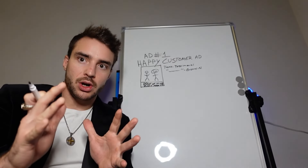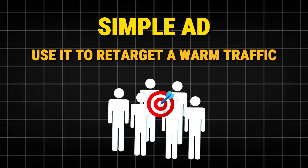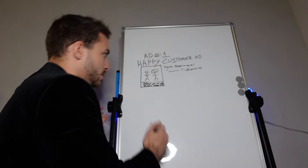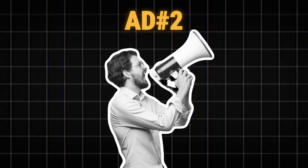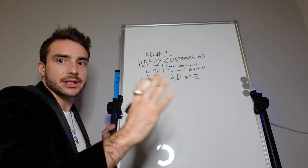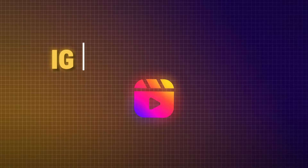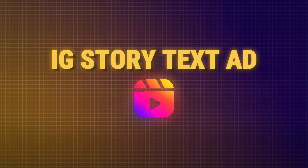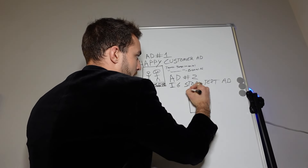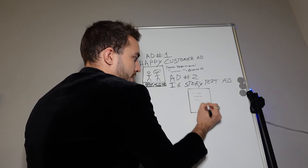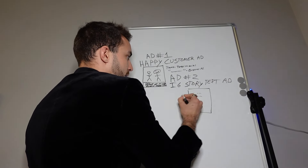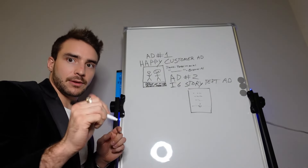That Happy Customer Ad generates good results. It's a simple ad you can use to retarget warm traffic or run to complete strangers in your local audience. The second kind of ad is going to be even easier to set up — it's an IG Story text ad. It's just going to have some words on it and a 'swipe up' or 'click below' call to action. This is the most simple ad you will ever see.